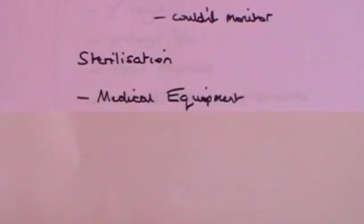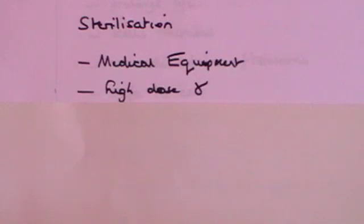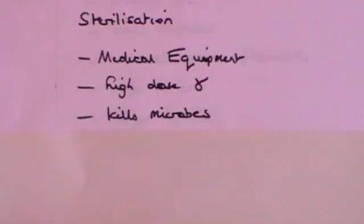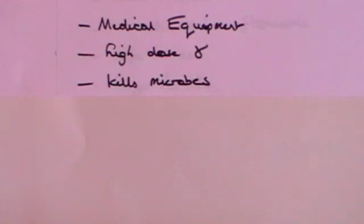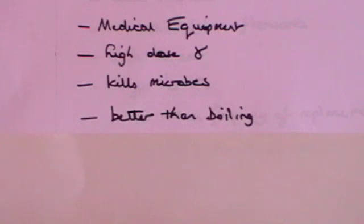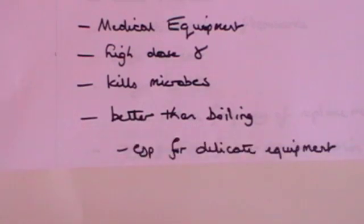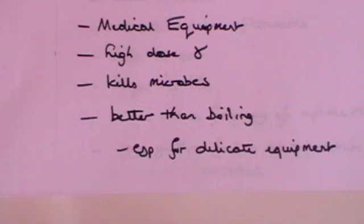Radiation is also used in the process of sterilization — for example, of medical equipment. If you use a high dose of gamma radiation, it will kill all the little microbes, the things that could otherwise cause disease. That's better than boiling, because if you've got very delicate equipment — particularly things like thermometers — you don't want to put those in boiling water. So it's much better to kill off any harmful cells with a high dose of gamma radiation.